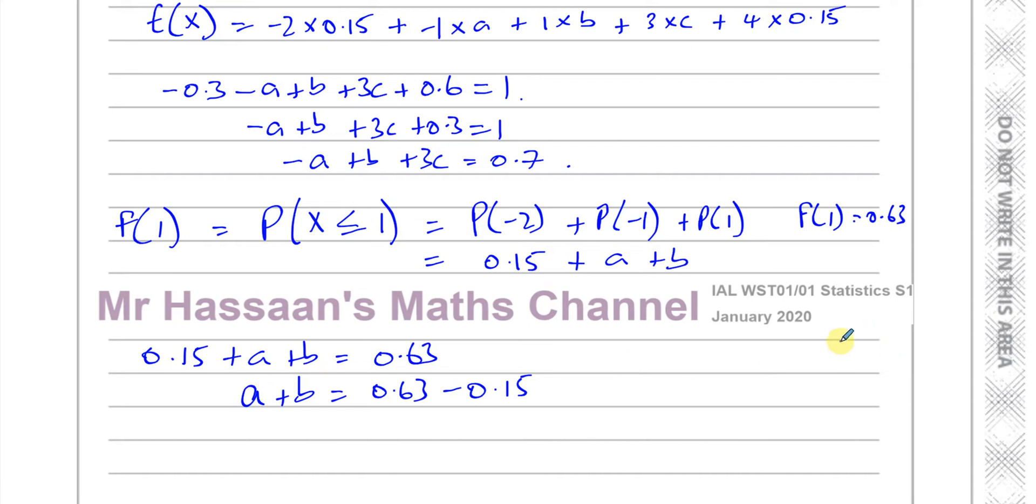I can say these added together is going to give me 0.63. Therefore, 0.15 plus A plus B gives you 0.63. So A plus B is equal to 0.63 minus 0.15. When you subtract them, 0.63 minus 0.15, you're going to get 0.48. That's what A plus B is. So that's another equation we've got now. We've got an equation like this, an equation like this, but we have three unknowns.